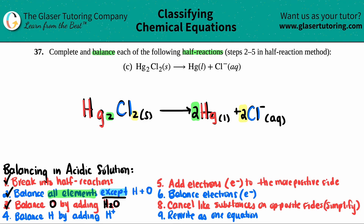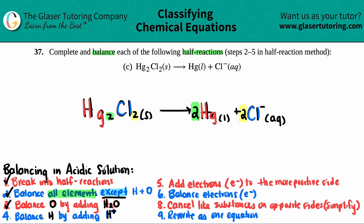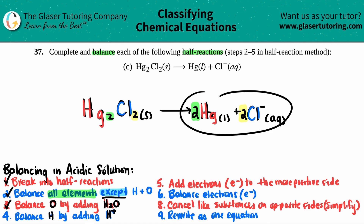Now moving on to step four: the next step is to balance hydrogen by always adding H plus. But once again, I look on my left side — I have no hydrogen; the whole thing is mercury. And then I look over on the right side and I have no hydrogen either, so I can skip over that step as well.